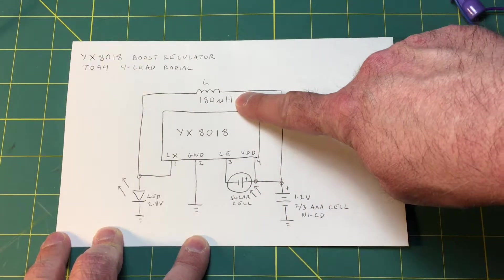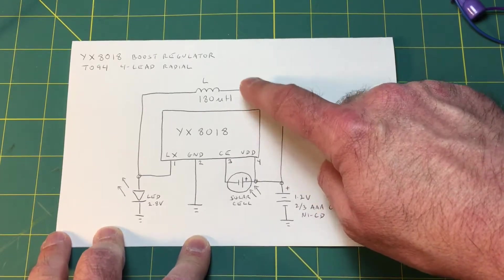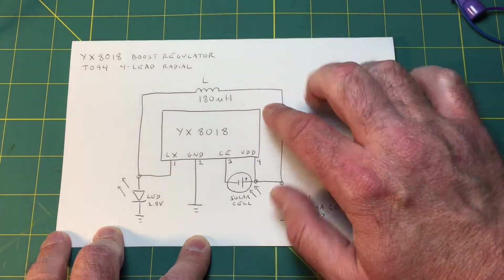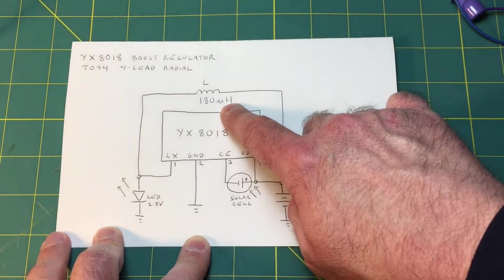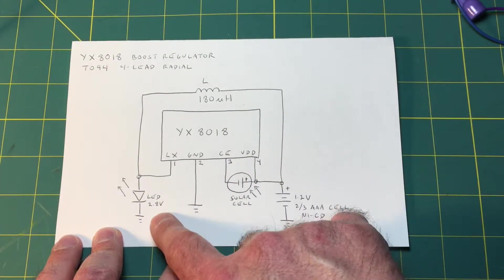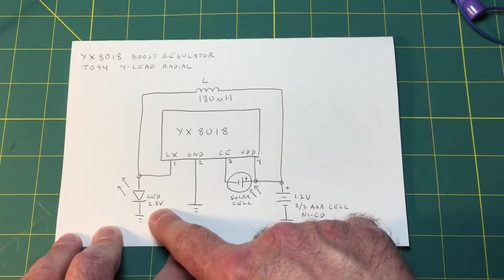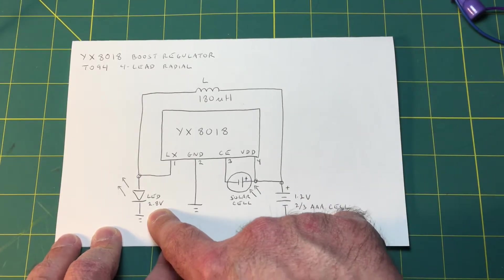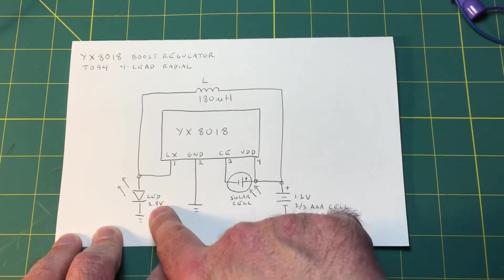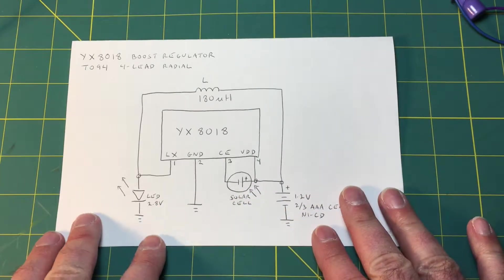This component which I misidentified as a resistor is actually an inductor and the green color should have given it away, but it's 180 microhenries as far as I can tell from the color banding. The LED comes on at about 2.8 volts or it drops about 2.8 volts I should say when it's operating, and it runs at about a 50% duty cycle which I'm going to show you in the next bit on my scope.